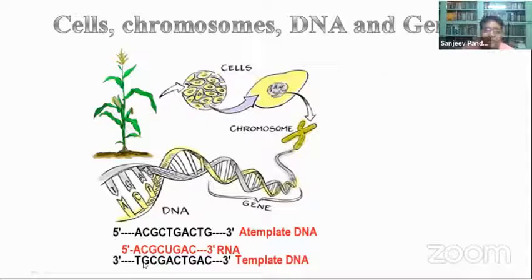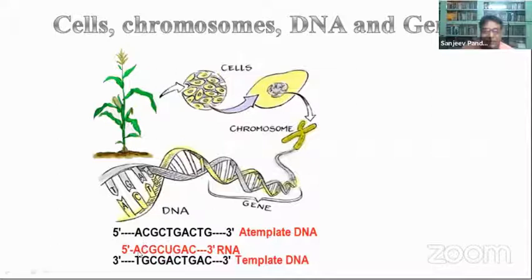When RNA is synthesized from DNA, it uses one strand as a template. The sequence of the RNA is the same as that of the non-template strand, except that T is replaced by U in the case of RNA. Otherwise everything remains the same — A, C, G are retained; only T becomes U.